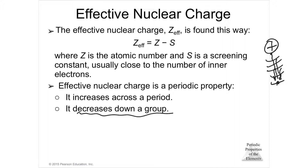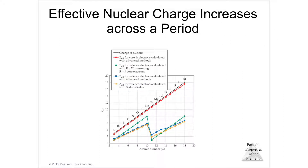The key difference you need to think about is that effective nuclear charge increases across a period. So if you go across a period — say from lithium to neon — the effective nuclear charge is going to go higher and higher all the way to neon.